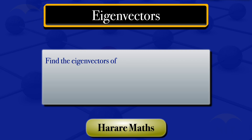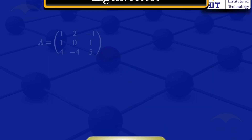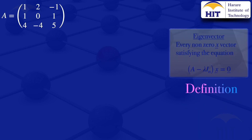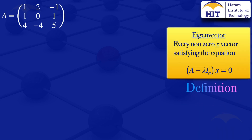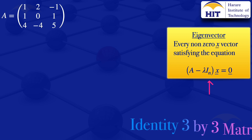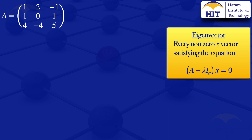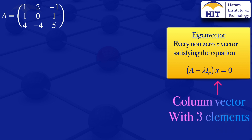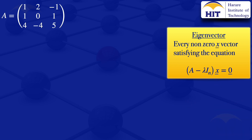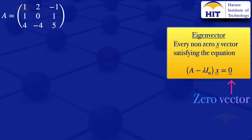In this tutorial, we are going to find the eigenvectors of the 3 by 3 matrix: 1, 2, minus 1, 1, 0, 1, 4, minus 4, 5. A nonzero vector x satisfying the equation (A minus lambda I_n) multiplied by vector x equals the zero vector is called an eigenvector of the matrix A. Here, lambda I_n is a 3 by 3 identity matrix, vector x is a column vector with 3 elements, and the zero vector is also a column vector with 3 elements.